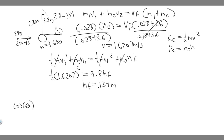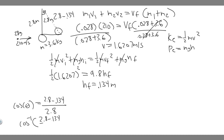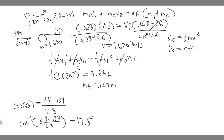We can find angle theta using cosine: cos(θ) equals adjacent over hypotenuse, which is (2.8 minus 0.134) divided by 2.8. Taking the arc cosine of that value gives θ equals 17.797 degrees, which we round to 17.8 degrees. So the angle theta is 17.8 degrees.